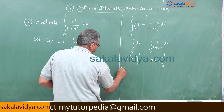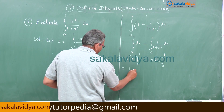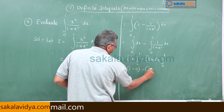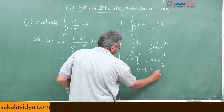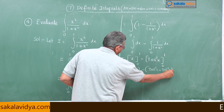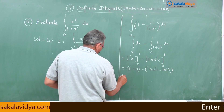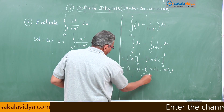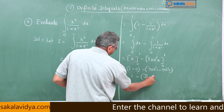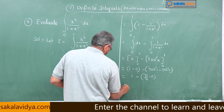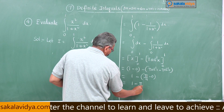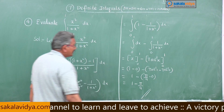This becomes (1 minus 0) minus (tan inverse 1 minus tan inverse 0). Tan inverse 1 is 45 degrees, i.e. π/4, minus 0. So the answer is 1 minus π/4.